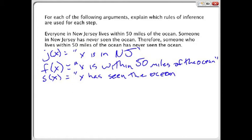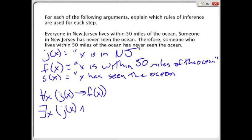Our first premise is that for all X, if this person X, or whatever X is, is in New Jersey, then it is within 50 miles of the ocean. Our second premise is for some X, there is someone who lives in New Jersey, and this X has not seen the ocean.